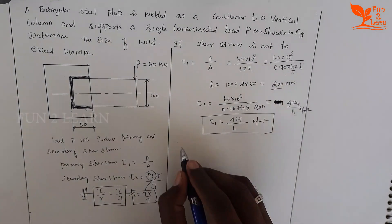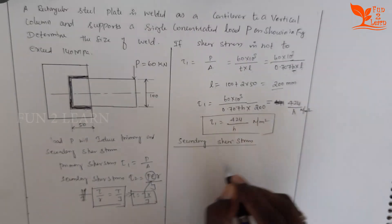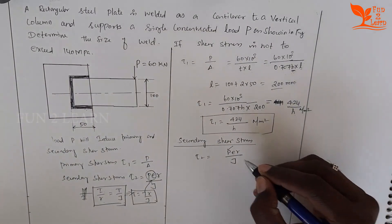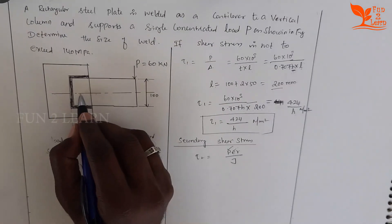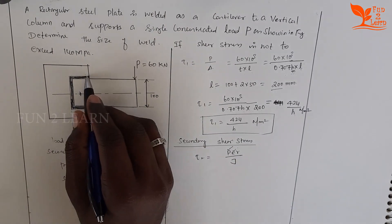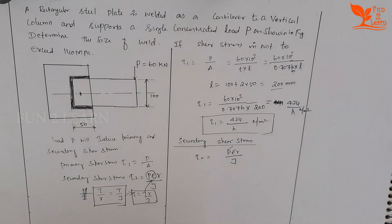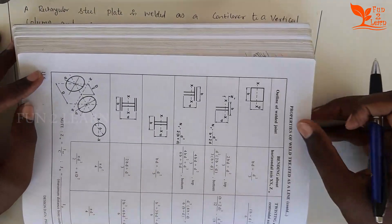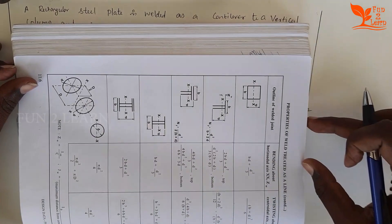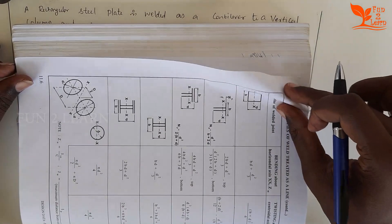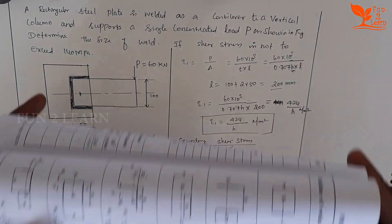Next is the secondary shear. τ₂ = P×e×R / J. We need to find the center of gravity of the weld group. From the data book page number 11.6, under 'Properties of Weld Joint Treated as a Line,' we use the C-section outline for this weld joint shape.